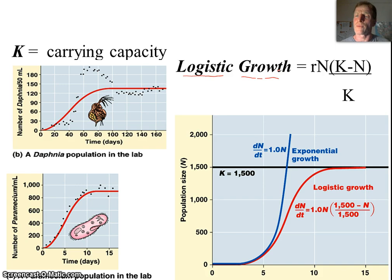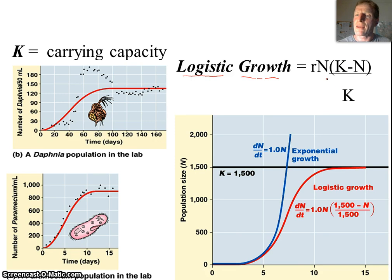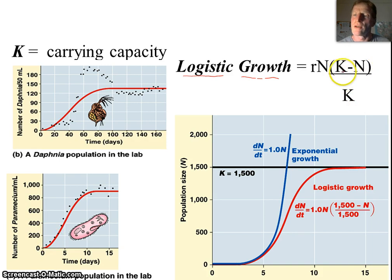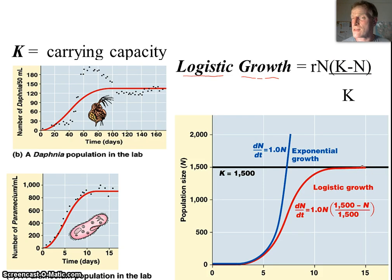The formula for logistic growth is: the growth rate times the population — which causes exponential growth — multiplied by the carrying capacity minus the population divided by the carrying capacity. When populations are very low, the carrying capacity minus the population is close to the carrying capacity, so this term is close to 1. As the population gets higher and equals the carrying capacity, this value goes to 0, which means population growth levels off and becomes 0 — zero population growth as they reach their carrying capacity due to limiting factors.